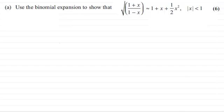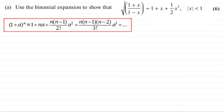Now, if we're using the binomial expansion for something like this — because we're going to be using non-integer positive powers — we need to use this particular formula: the form (1 + a)^n, which equals 1 + na + n(n−1)/2! × a² + n(n−1)(n−2)/3! × a³ + and so on. You should be familiar with this formula; it generally is in most formula books.